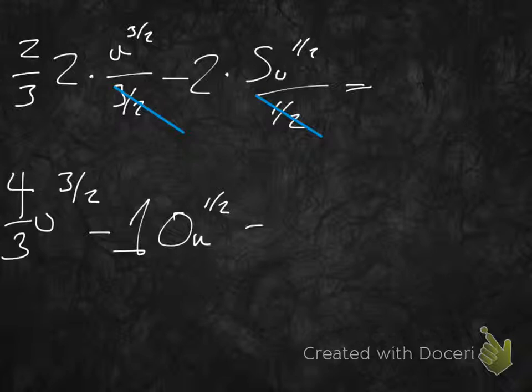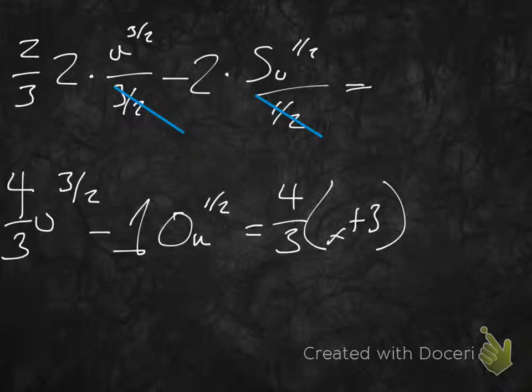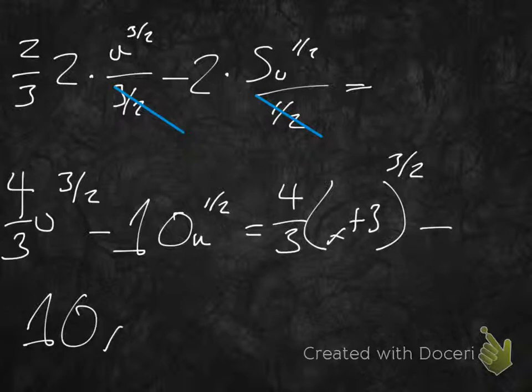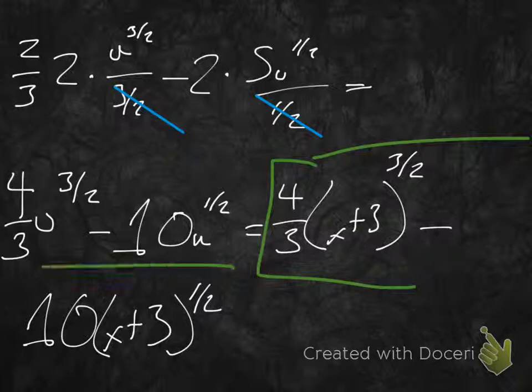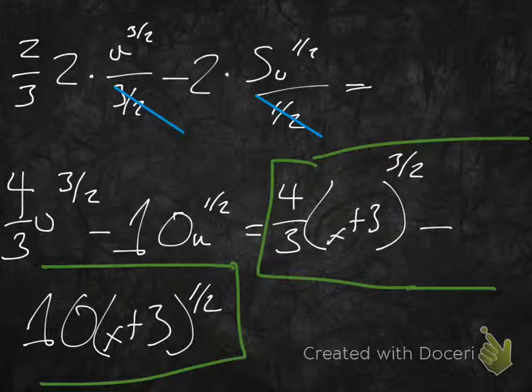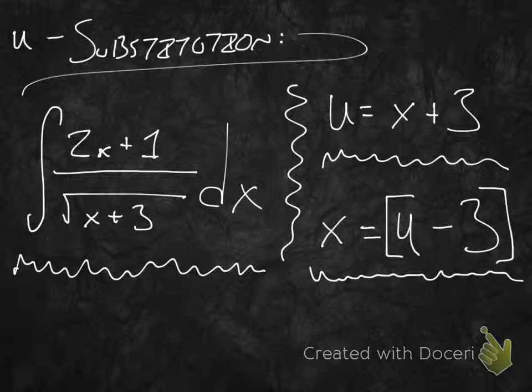If we factor this and make it pretty, we go and plug in our original u, what we did our substitution for. This equals 4 thirds x plus 3 to the 3 halves minus 10 times x plus 3 to the 1 half. So here's what we've got as our final answer. This was our u-substituted integral or antiderivative of 2x plus 1 over radical x plus 3 dx.